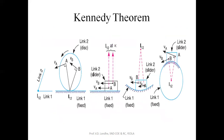Now, in this case, for example, for the first diagram, this is link 1 and 2, which is having one turning pair, so this will be ICR i12. This is the disc which is rolling on the fixed surface, so the ICR will lie at this point of contact, that is i12 here. This is the slider which is having constant motion on this fixed surface, so this ICR i12, for link 2 and link 1, will be perpendicular to this motion. Similarly, for the curved slot, it will be at the center of the radius of the circular path. In this way, we will be locating the ICRs.